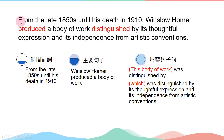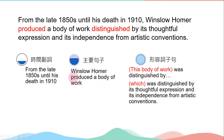第四句：From the late 1850s until his death in 1910, Winslow Homer produced a body of work distinguished by his thoughtful expression and its independence from artistic conventions。前面是時間副詞，強調這一段期間，放在句首。後面是主要句子：Winslow Homer produced a body of work。我們要強調是什麼樣的作品，所以後面有形容詞子句。本來是 this body of work was distinguished by，重複了，變成 which was distinguished by。用被動語態 was distinguished，表示他的特色與別人的作品不一樣。